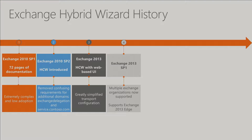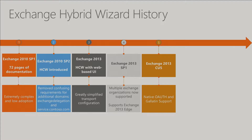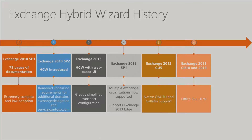In Exchange 2013 we updated a lot of our transport options because we initially thought everybody did transport one way and found out that wasn't the case. We had to light up extra ways to do transport including edge transport. Eventually in CU5 we started lighting up options to have the hybrid wizard in 21Vianet and Gallatin, and then updated it to be a new application about a year ago.